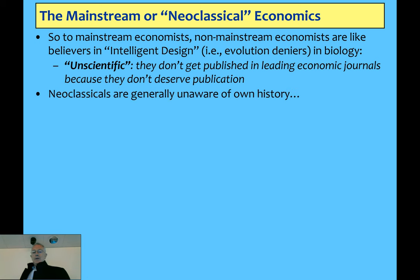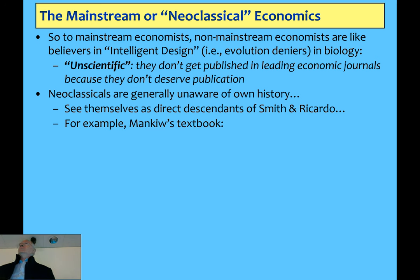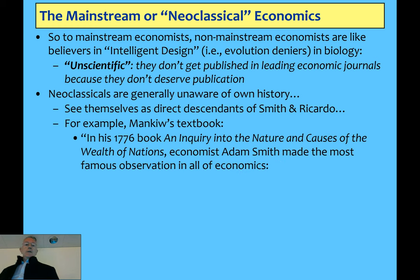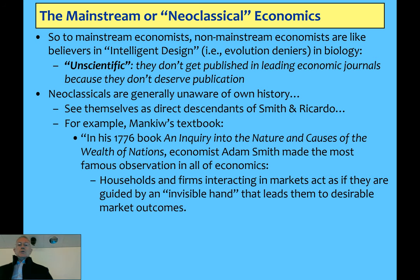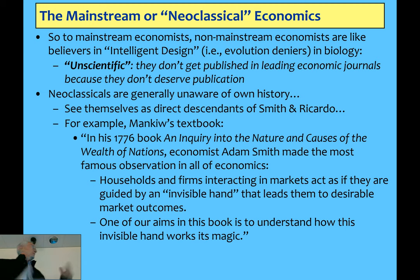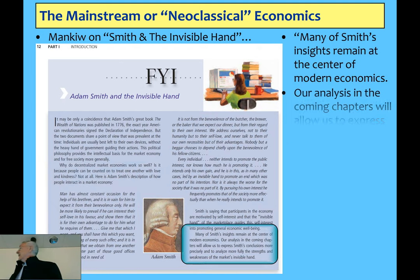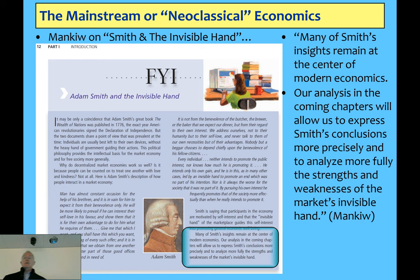The neoclassicals themselves tend not to be very aware of their own history. They talk about evolving from Smith and Ricardo, who are the original economists. If you read Mankiw's textbook — which some universities use — he says in 1776, Smith made one of the most famous statements in economics. The way Mankiw describes it, households and firms interacting in markets as if guided by an invisible hand leads them to desirable market outcomes. That's the idea that individuals trying to maximise their own utility and profits leads to a socially desirable outcome as well. Many of Smith's insights remain at the centre of modern economics.